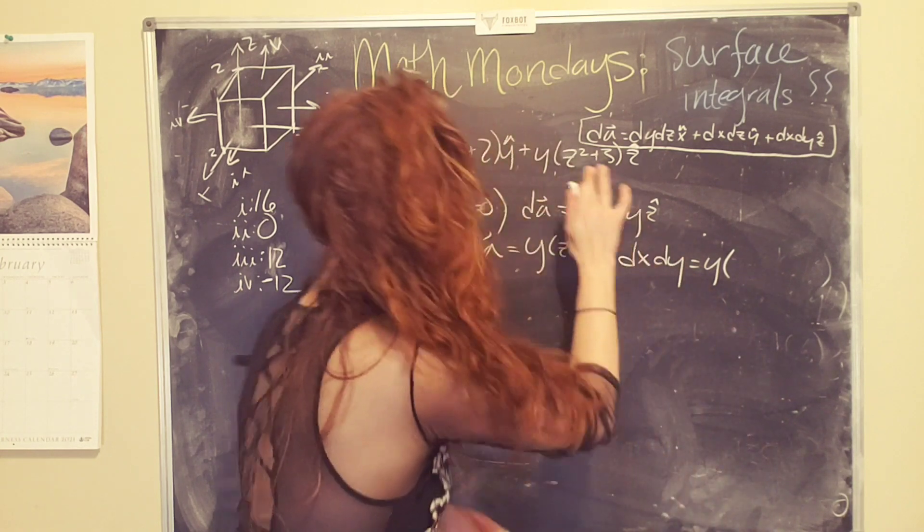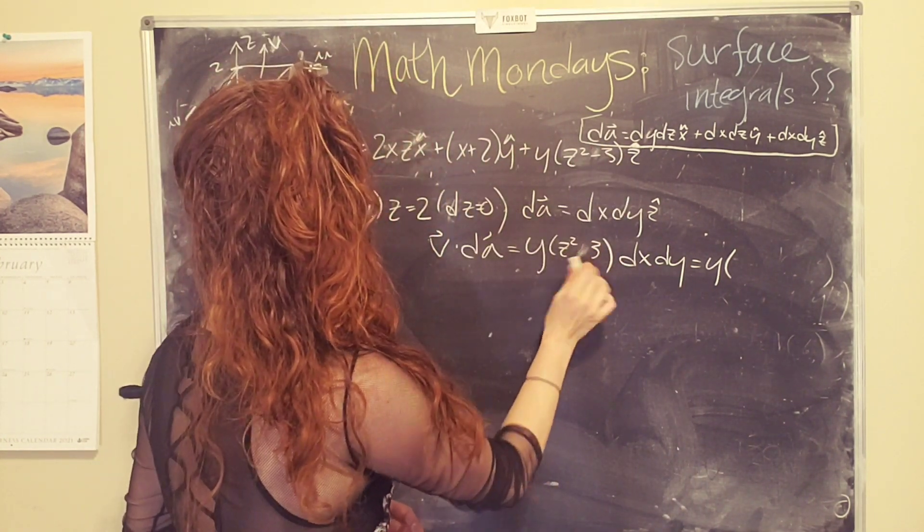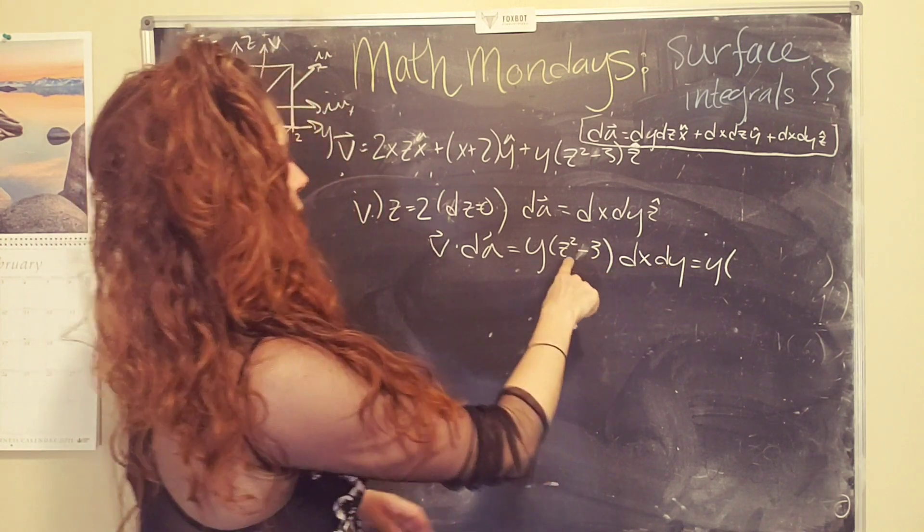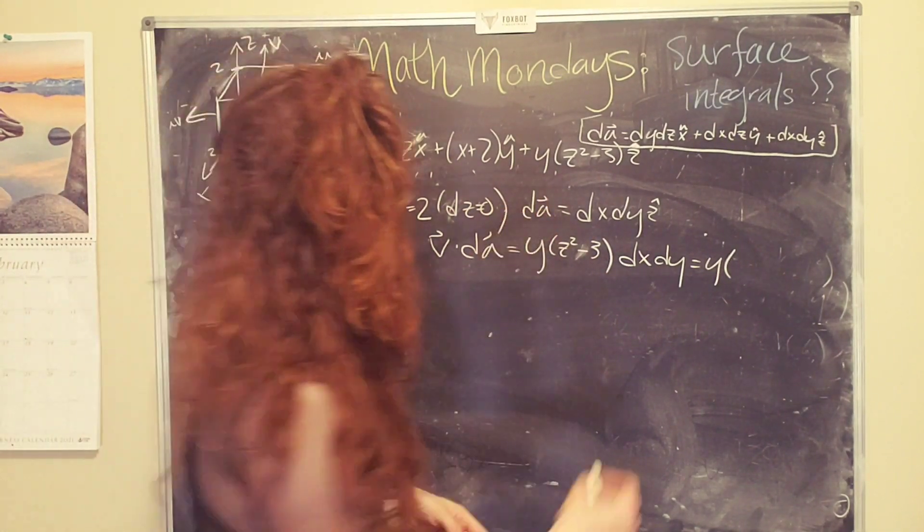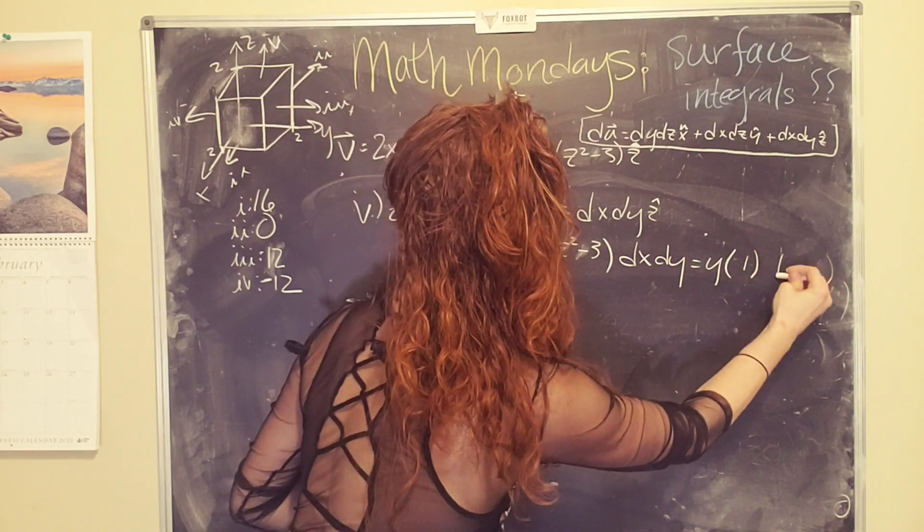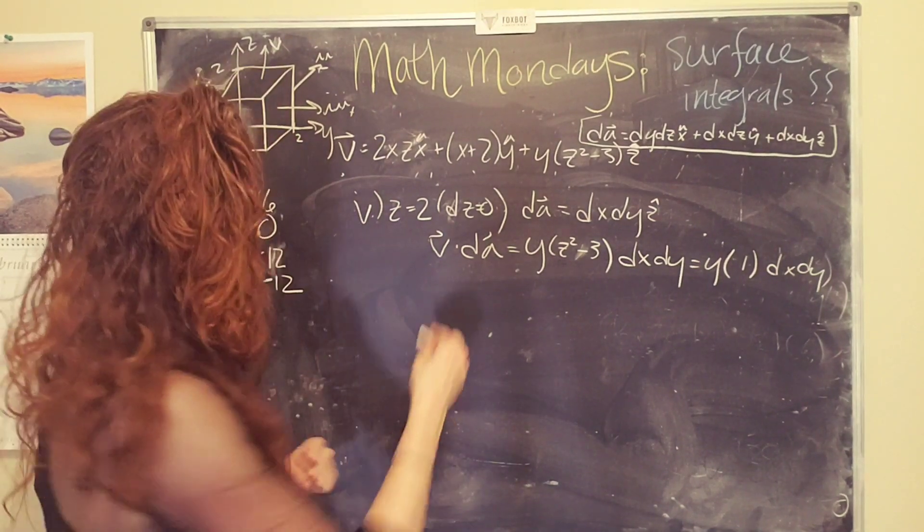my bad. Minus. Minus. Wait a second. Okay. So we have four minus three. I did memorize something about this function. Okay. So we're going to have y times one times dx dy. Ooh, I like that. That's a little bit simpler. Okay.